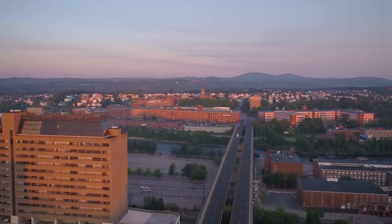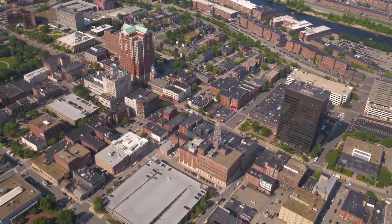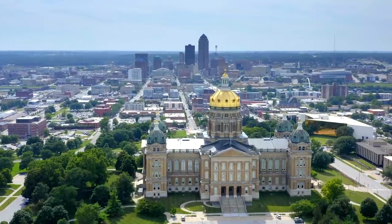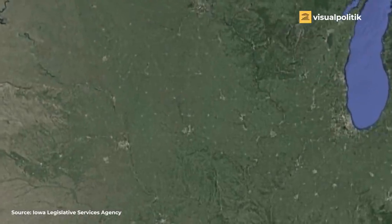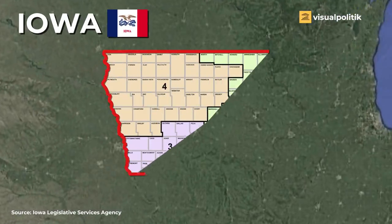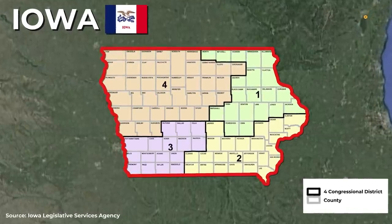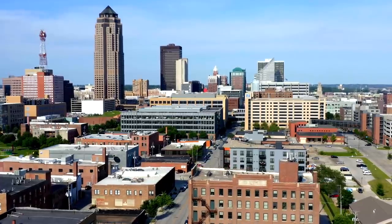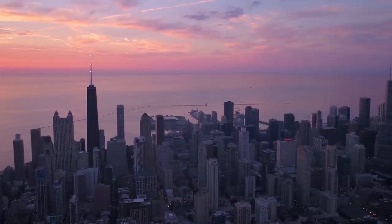How the district maps are drawn is extremely important because there are two ways to draw the lines. In the state of Iowa, computer software designed to avoid splitting counties and that does not take into account political interests is used to draw the districts, producing almost exemplary results. But this isn't the norm. In most states, it has traditionally been the political party that dominates the state legislature that defines the electoral districts — and when they resort to gerrymandering, the district maps start to take on some very odd shapes.